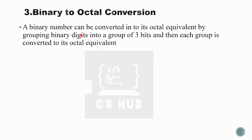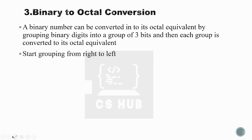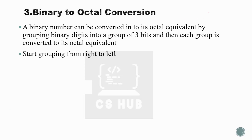A binary number can be converted into its octal equivalent by grouping binary digits into groups of three bits. Each group is then converted to its octal equivalent. Start grouping from right to left. One octal digit is equivalent to three binary digits.